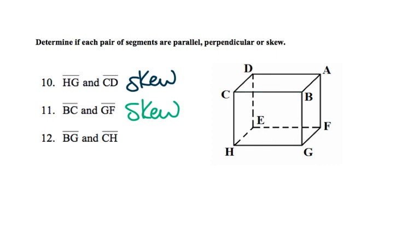Finally, BG and CH — they're both going up and down. They'll never intersect and they're going in the same direction, making this parallel.